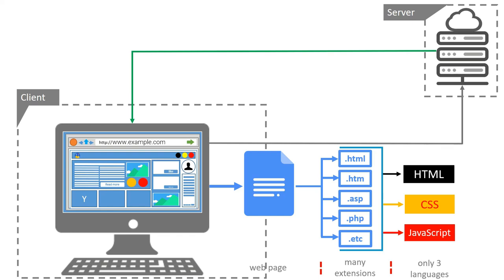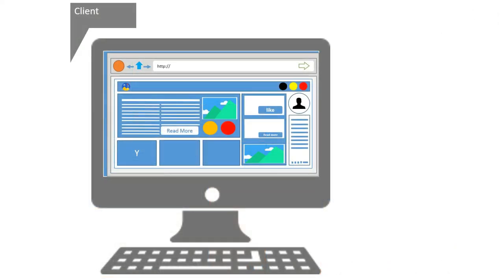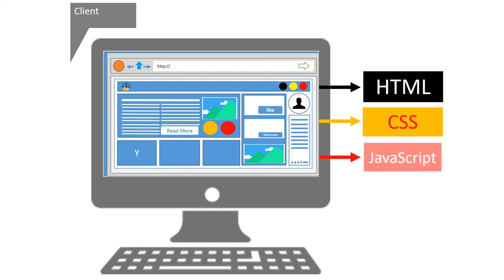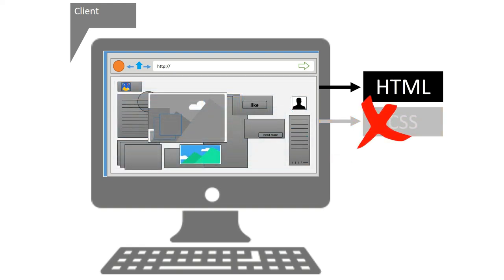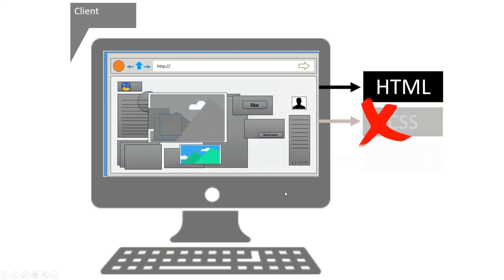The webpage will always be developed in three languages: HTML, CSS, and JavaScript. Let us remove CSS and see how things look. When we remove CSS and JavaScript, you can see only the content is remaining — the color has gone, the shapes have gone, and the orientation has gone. Only the structure has remained, the content. And that brings us to the definition of HTML.